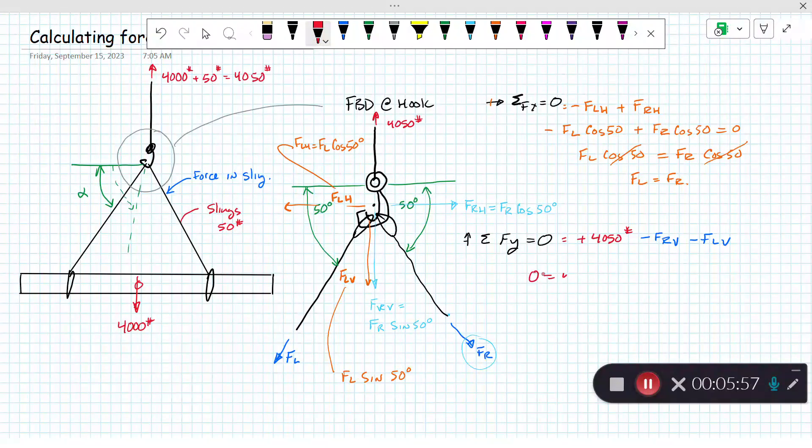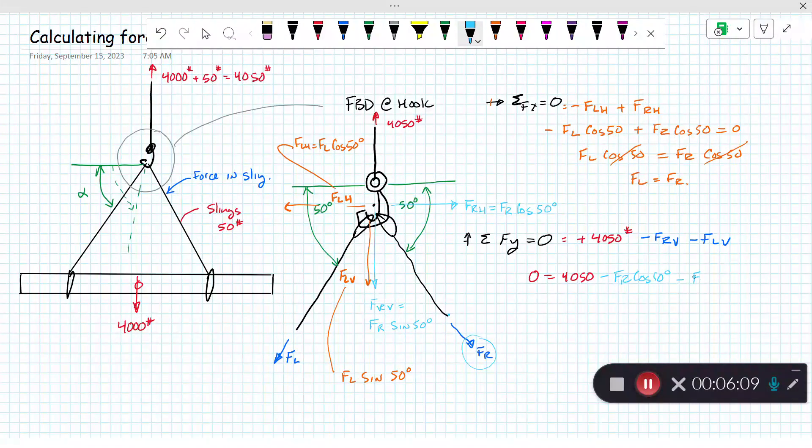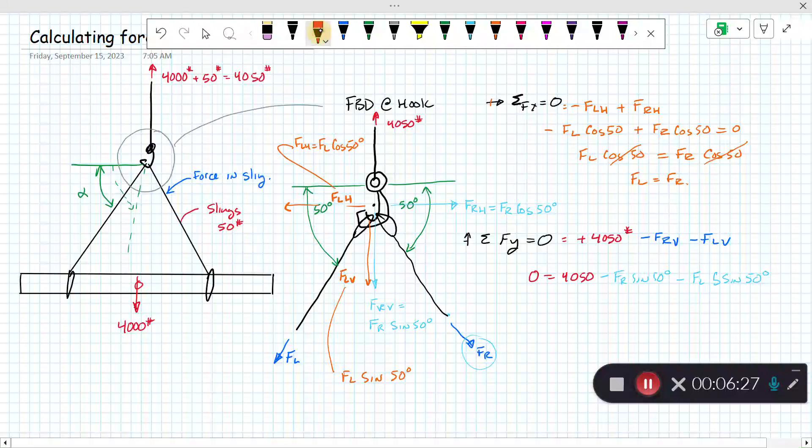Let's substitute in and we get zero equals 4,050 minus FR sine of 50 minus FL sine of 50 degrees.